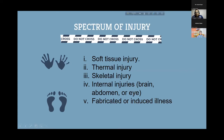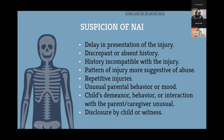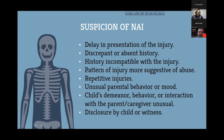The spectrum of non-accidental injury includes soft tissue injury, thermal injury, skeletal injury, internal organ injury to the brain, abdomen or eyes, and fabricated or induced illness. Suspicion arises when there is: delay in presentation of injury, discrepant or absent history incompatible with the injury, a pattern suggestive of abuse, repetitive injuries of different ages, unusual parental behavior, unusual child demeanor or interactions with caregivers, or unusual disclosure by the child.